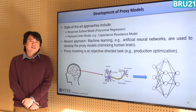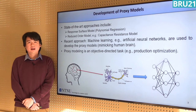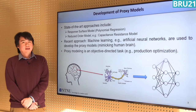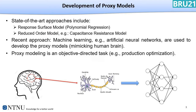DDRM can also be alternatively known as Proxy Modelling. There are several state-of-the-art approaches used to perform this Proxy Modelling, including response surface models and reduced order models. However, with the growth of digitalization and technological advancement today, machine learning has also been suggested as another possible approach, because it has been proven to capture the non-linearity of relationships modeled. One example of machine learning is artificial neural networks, which will be mainly used in this work. It is also important to realize that proxy modeling is an objective-directed task, meaning we need to know what the proxy is used for before building it.